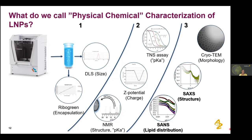Wave three involves instruments we don't have in-house and typically need to access at universities or large-scale facilities. One of these is cryo-TEM, which gives images of how the LNPs look. We can also do small angle X-ray scattering and neutron scattering to examine both the structure and the lipid distribution within the particles.